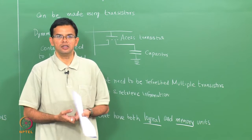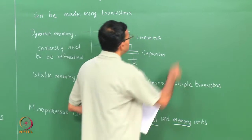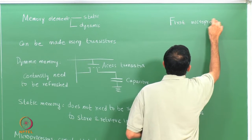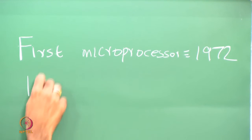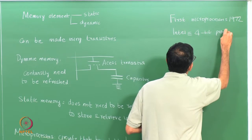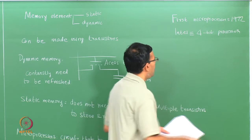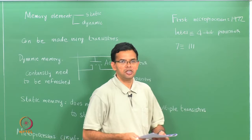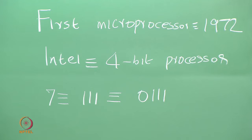The input and the result can be retrieved whenever needed. The first microprocessor was built in 1972, built by Intel. It was essentially a 4-bit processor, which meant each element was essentially stored with 4 bits. Earlier we looked at the number 7 and represented it as 1 1 1. Using a 4-bit processor it just becomes 0 1 1 1.